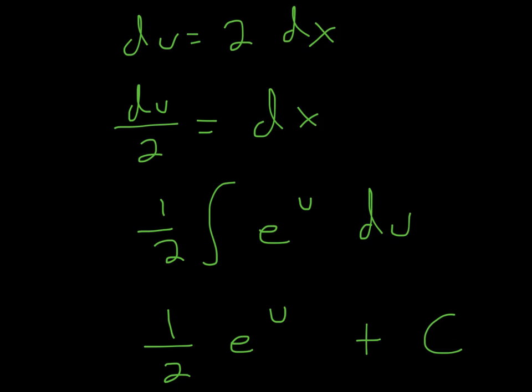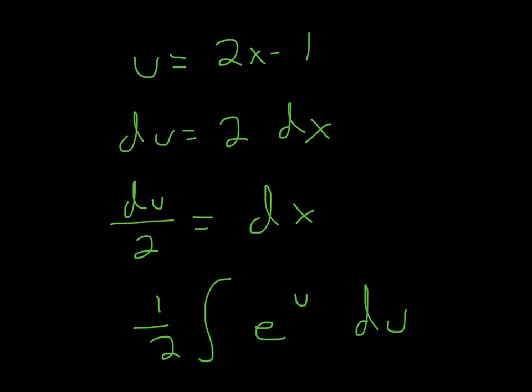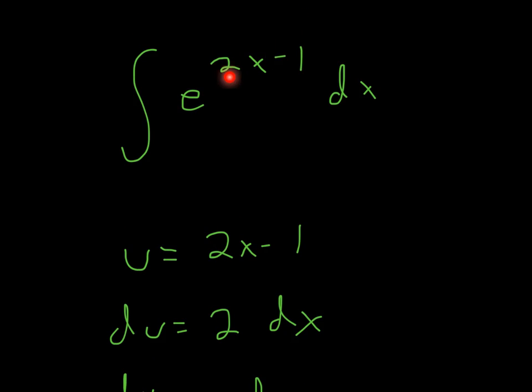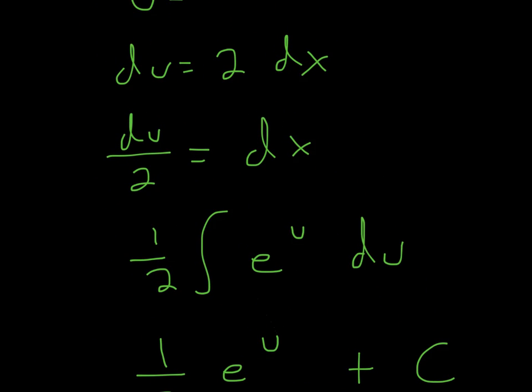Now you can represent that as 1 half. So all I'm doing is pulling that out, 1 half, e^u, because I said u is equal to 2x minus 1. So I can get rid of this and just put u instead. And then for the dx, I represented that as du, because this equals dx.